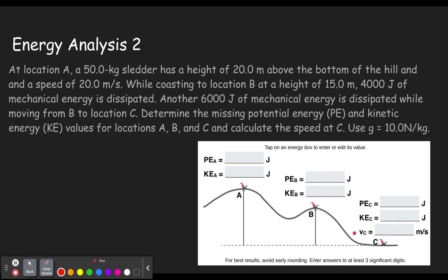At location A, a 50 kilogram sledder. So we know the mass equals 50 kilograms, and has a height of 20 meters above the bottom of the hill. So the height at position A is 20 meters, and a speed of 20 meters per second. So the velocity at A is 20 meters per second. While coasting to location B, coasting is key because it means we're not adding energy to our sledder, roller coaster, skier, whatever it might be.